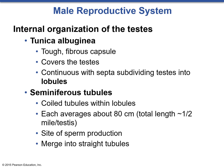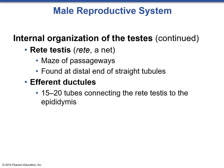Looking inside the testis, we have the tunica albuginea, the seminiferous tubules, and the overall connecting passageways. The tunica albuginea is a tough fibrous capsule that covers each testis individually. The seminiferous tubules are the main functional structure — they are the site of sperm production. They are coiled tubules within each lobule, averaging about 80 centimeters in length, and they merge into the straight tubules. Then we have the rete testis, which follows the seminiferous tubules and collects and redirects the sperm to the efferent ductules — the 15 to 20 tubes connecting the rete testis to the epididymis.